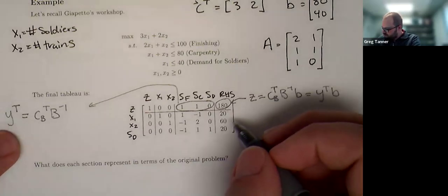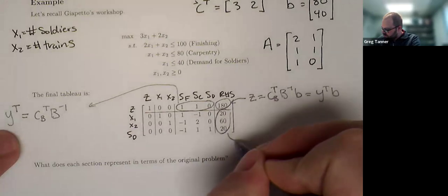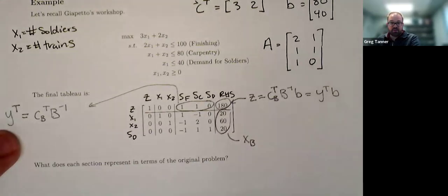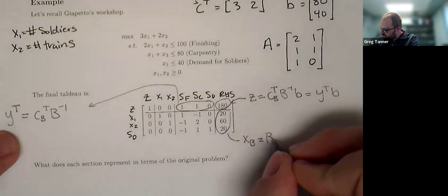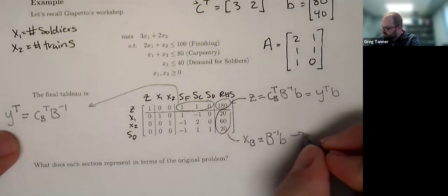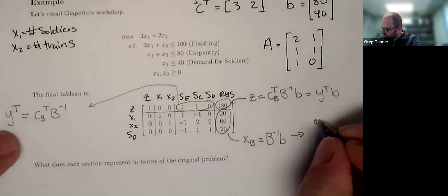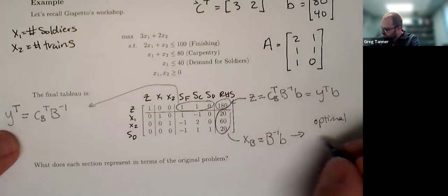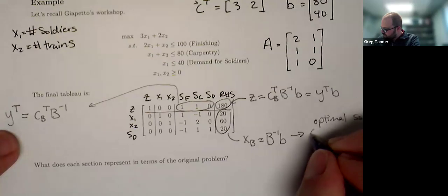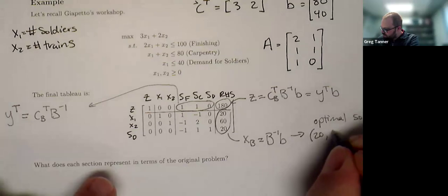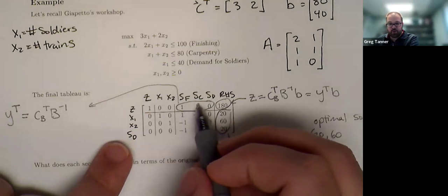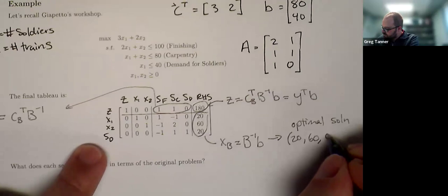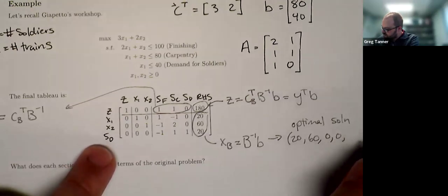Let's pick out another part of this. So this here is going to be XB, which is the solution of our basis variables. This is equal to B inverse B. And this tells us that our current solution, which is our optimal solution because this is the final tableau, is X1 is 20, X2 is 60. SF and SC are both non-basic variables, so they get values of zero and zero. And then SD is 20.